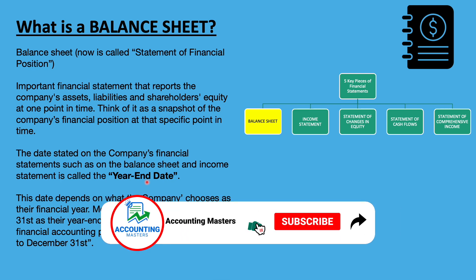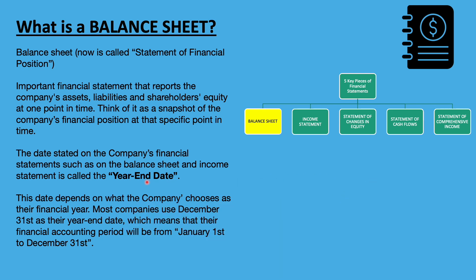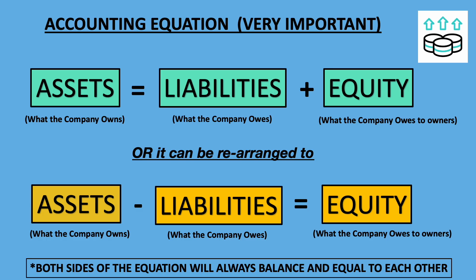This date depends on what the company chooses as their financial year. Most companies use December 31st as their year-end date, which means that the accounting period will be from January 1st to December 31st. Let's review the accounting equation, as this is basically what the balance sheet consists of. If you haven't watched the last video on the five types of accounts in accounting, please check that video link at the top right-hand corner.